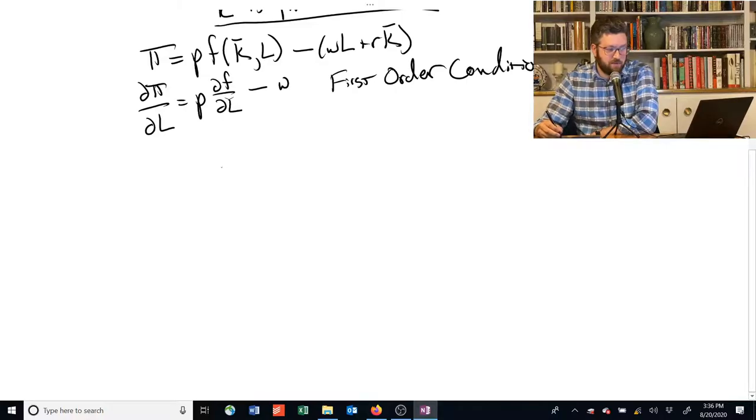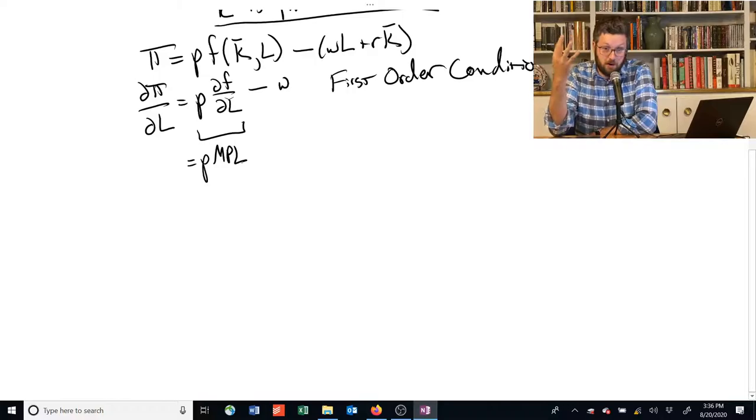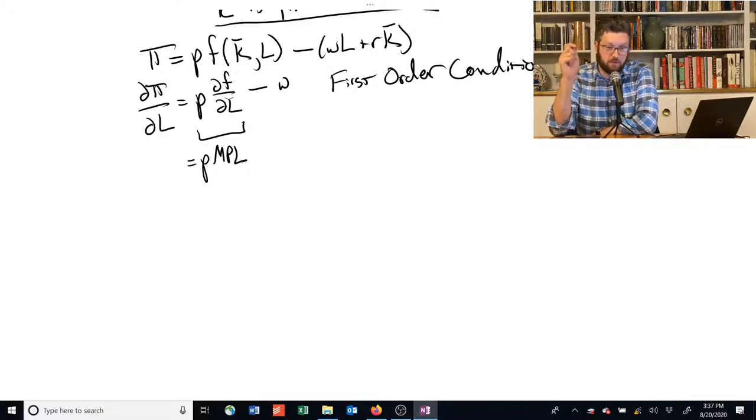And we can see there's kind of two effects. If you add one more laborer, you produce more sales because this here is the marginal product of labor. The derivative of the production function with respect to labor is the marginal product of labor. If we multiply that by P, that's telling us you add one more laborer, you're going to generate a little bit more output. The amount of output you generate is equal to the marginal product of labor. And the amount of sales that that translates into is how much that stuff sells for.